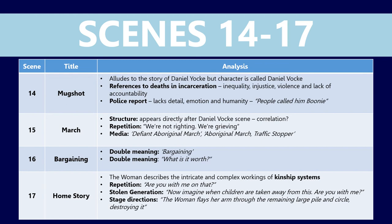In scene 15, I've noted the structure — it appears directly after Daniel's death. There's no clear correlation between the two scenes, apart from the fact that Daniel happens to be at Musgrave Park and the march is at Musgrave Park — so we could perhaps make the connection that this march could be about his death and deaths in custody. The repetition of 'we're not fighting, we're grieving' is really important — this is how they release their grief, by marching in silence. I've also noted the media headlines: 'Defiant Aboriginal march' and 'Aboriginal march, traffic stopper' — the idea that this is a peaceful march but isn't reported that way is really important in discussing institutions, who, like the police, aren't held to account.